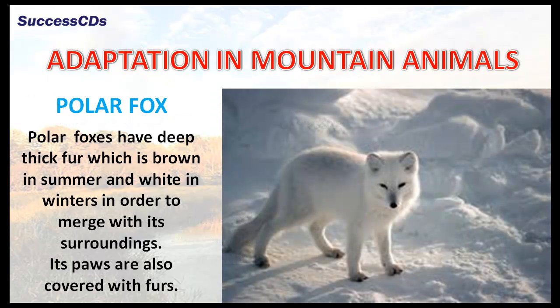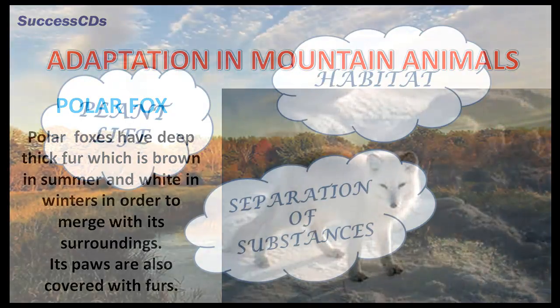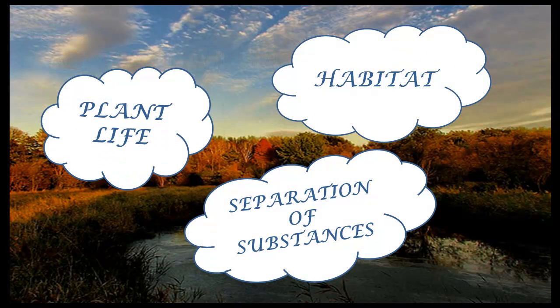Polar foxes are also found in the snow-covered Arctic areas. They have deep, thick fur which is brown in summer and white in winters in order to merge with their surroundings. Their paws are also covered with fur. Try to find out how you adapt to your surroundings in school, at home or in the marketplace, and see what happens when you click on the links provided on the screen. Thank you.